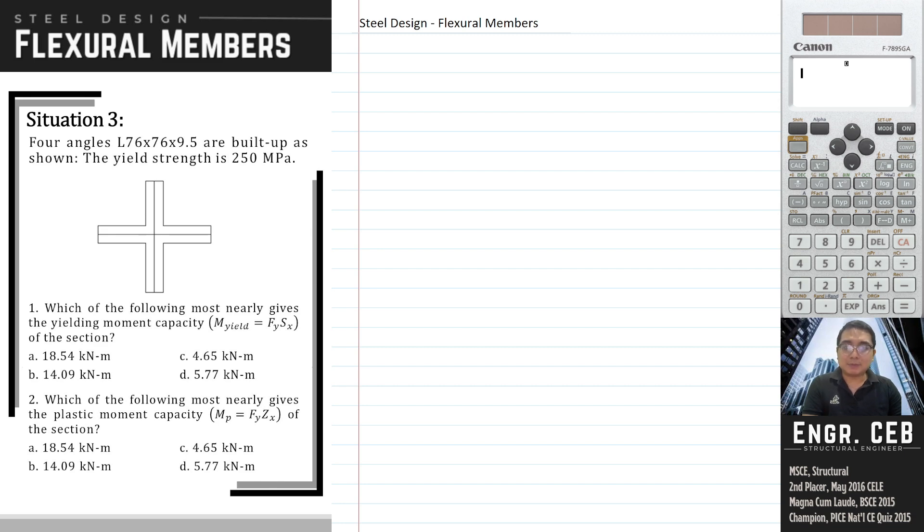When you say yielding moment capacity, it depends on the strength of the section such that the extreme fiber will reach the yield strength of 250 MPa. Using elastic analysis, the stress on the furthest fiber from the neutral axis will reach the yield strength.